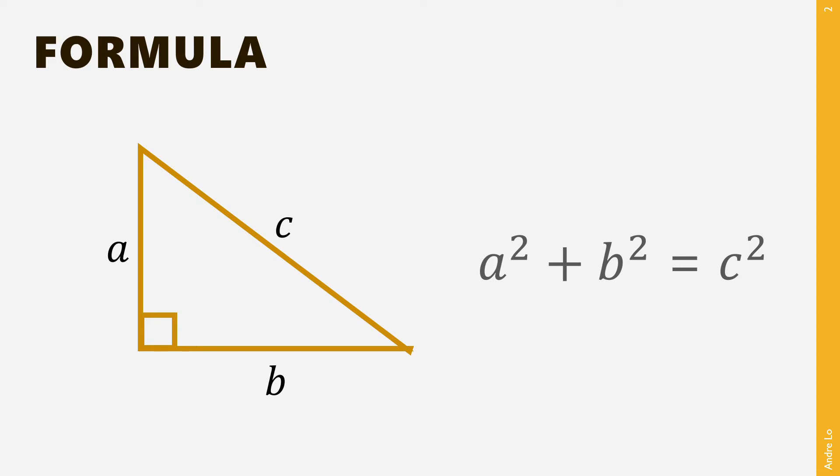Knowing this formula, we can find out the length of any side of a right-angled triangle as long as we know the length of the two other sides. Let me show this to you using two examples.